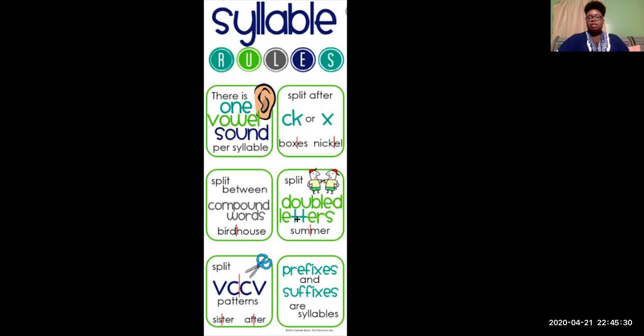Split double letters. For example, our word here is summer, and we see we have two Ms there. So our consonant, consonant, vowel pattern right between those two consonants. So we have sister. We're going to split right there where we see our two consonants beside one another. Sister.